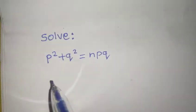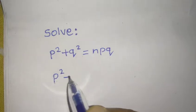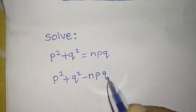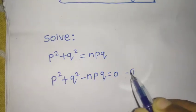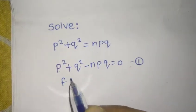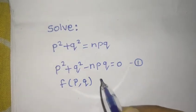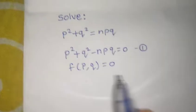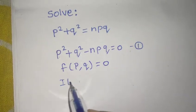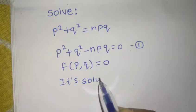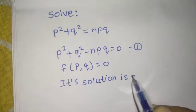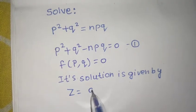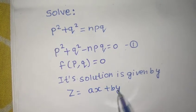The first step is take everything to the left hand side. So, you get P square plus Q square minus N PQ equals to 0. Mark this as equation number 1. This is the function of P comma Q. This is the standard format. Now, its solution is given by...